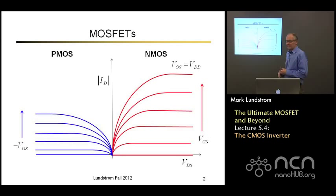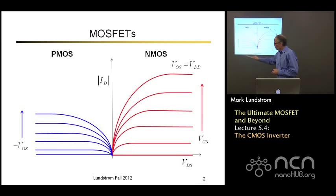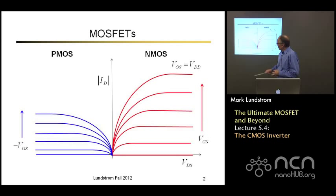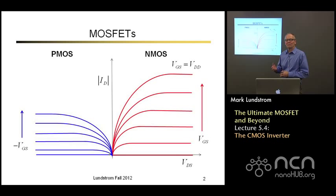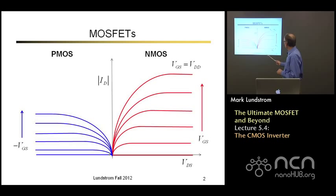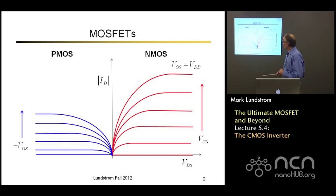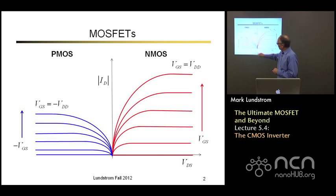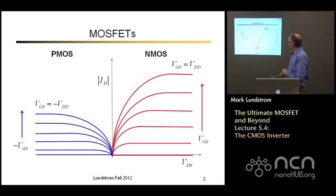We have a complementary P-channel device with a P-type source and P-type drain. We apply a negative voltage to the drain to attract holes from the source, and we apply negative voltages between the gate and the source to lower the potential barrier for holes. So we get a series of curves that look like the complement — all the positive voltages become negative. We have to apply a gate voltage more negative than some critical voltage to turn the device on. The maximum current occurs when we apply the maximum negative voltage to the gate, which is minus the power supply voltage.